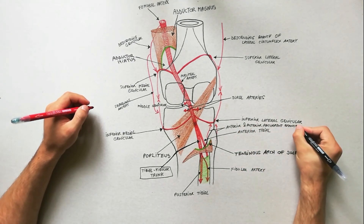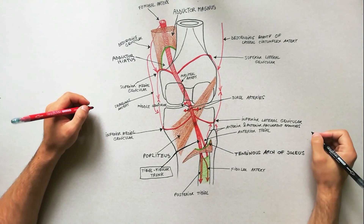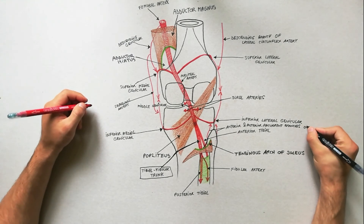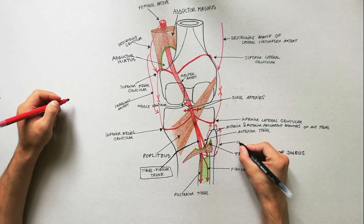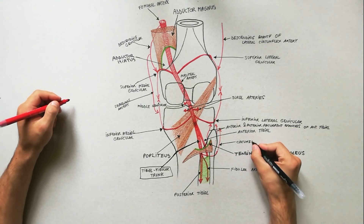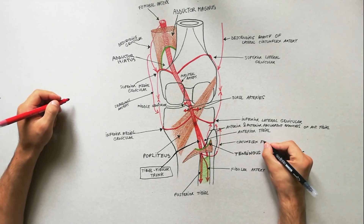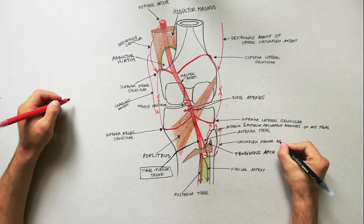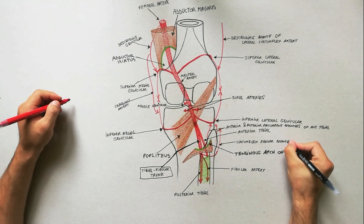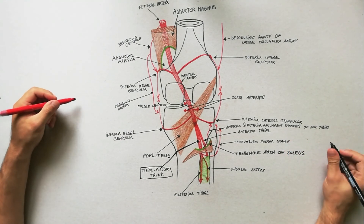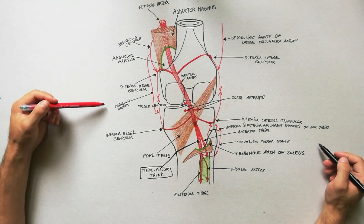The genicular anastomosis maintains adequate blood supply to the knee joint and leg during flexion of the knee joint, when the popliteal artery is compressed and blood flow in it becomes sluggish.